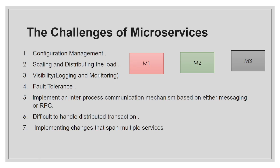The fourth challenge is fault tolerance. If you are calling microservice M2 from microservice M1 and M2 is down for some reason, how do you handle that? It should not propagate the error all the way backward. How will you handle that fault tolerance? That is again a problem.